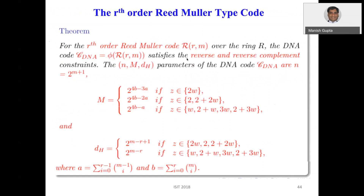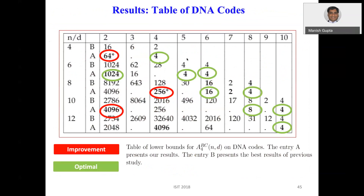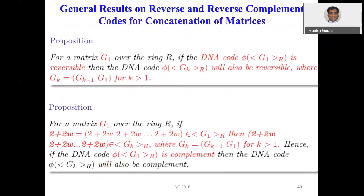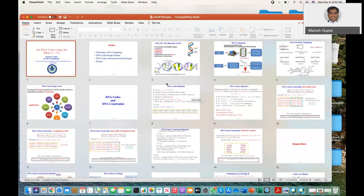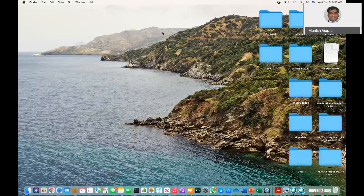We have a general result for the r-th order Reed-Muller code as well. Looking at the results table, the green entries are codes obtained through our constructions that meet optimal bounds, and the red entries are improvements on existing tables. That concludes the presentation on DNA codes. Good luck on the final exam, please do your projects — thank you.